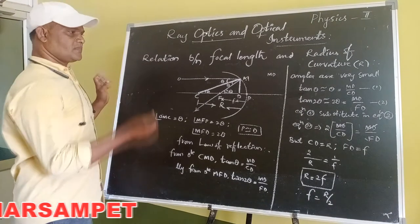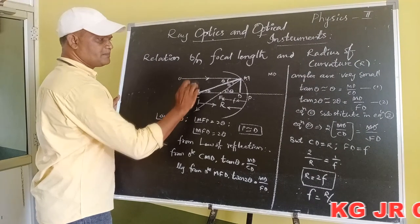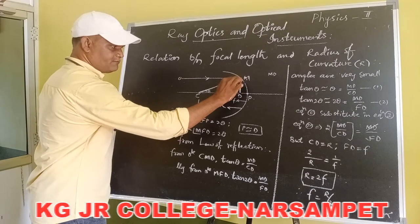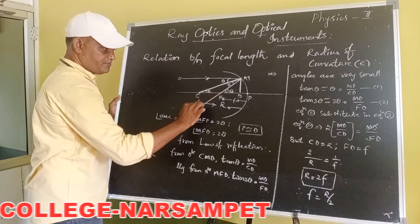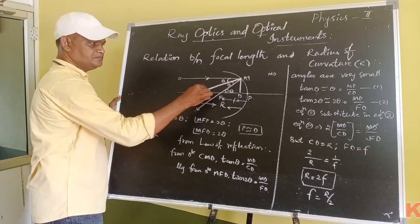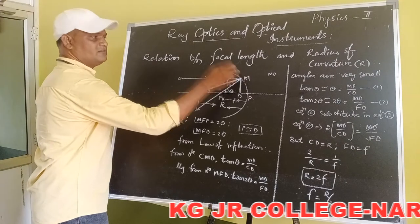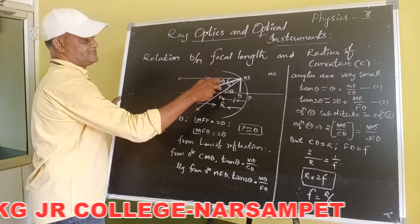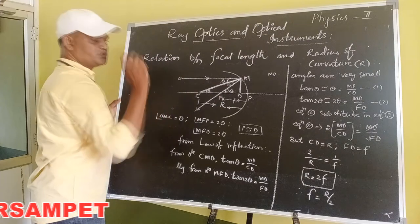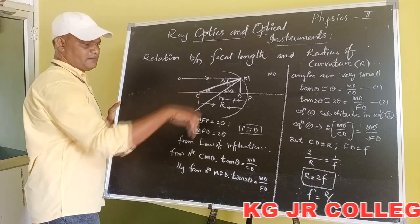Let us listen once again. Initially, the light ray parallel to the principal axis is incident along OM and reflected along MF. At the point of incidence, we draw the normal CM. Due to this normal, we determine the angle of incidence and angle of reflection. The angle of incidence is theta and the angle of reflection is 2 theta. From the law of reflection, the angle of incidence always equals the angle of reflection.